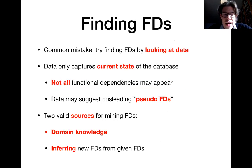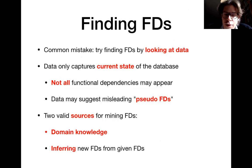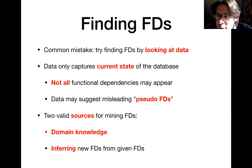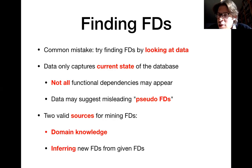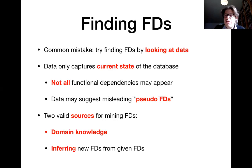At the end of the last lecture, we started discussing how we can find functional dependencies for a given database schema. What does not work is to try to look at the current data, because that only represents the current state, and even if it looks as if you have a functional dependency there, it might not generalize. Valid sources for functional dependencies are, first of all, domain knowledge — if you know from your use case analysis that a functional dependency must hold — and based on some initial FDs from domain knowledge, you can infer more via algorithmic methods.